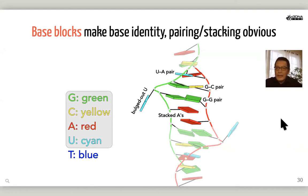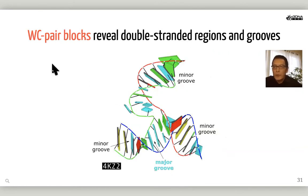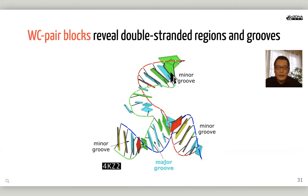In block-wheel schematics, DSSR generates base blocks that make base identity, base pairing, and stacking obvious. Using the NDB color convention: G is green, C is yellow, A is red, U is cyan, and T is blue. You can immediately see stacked A's colored red, a GG mismatch pair, a GC pair green and yellow, and a UA pair cyan and red. You can also see a bulging-out U colored cyan. DSSR produces Watson-Crick base pair blocks that reveal the double-helix region and groove. The minor groove is colored black; the major groove is the base's own color.